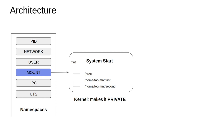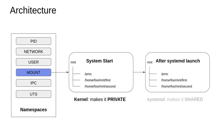Now this is good, but there's a catch. Unfortunately — or fortunately — though the kernel makes the mount namespaces private during the system boot process, the systemd daemon gets started immediately after the init process and takes all the mount points which the kernel created in private mode and makes them all shared.